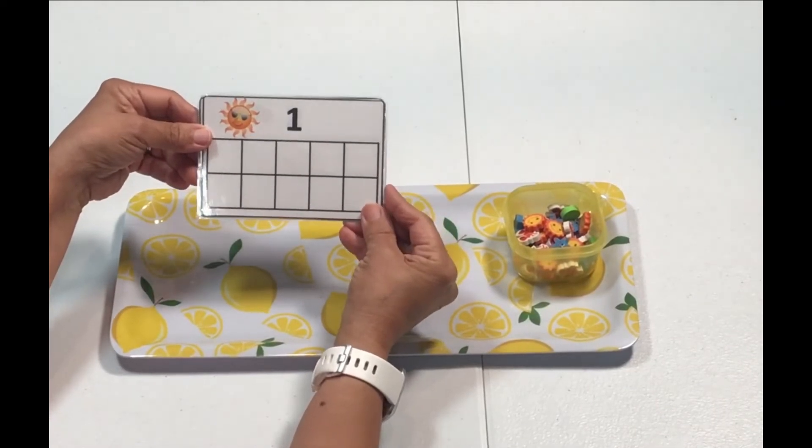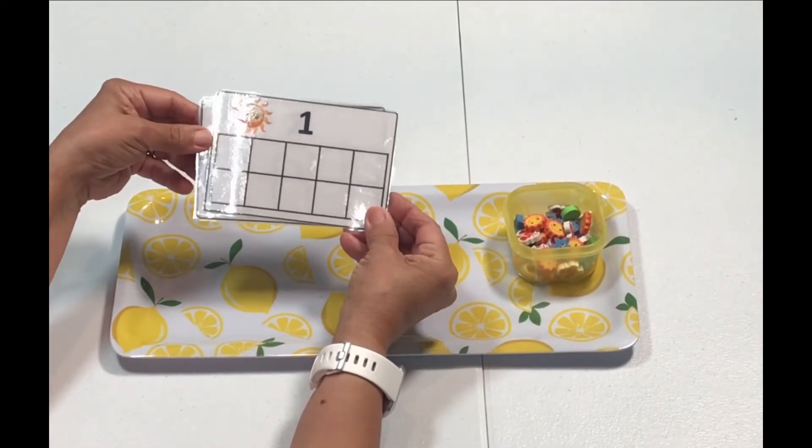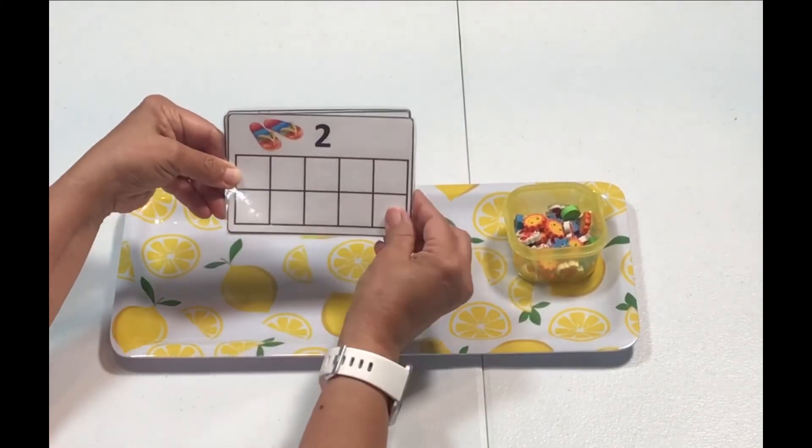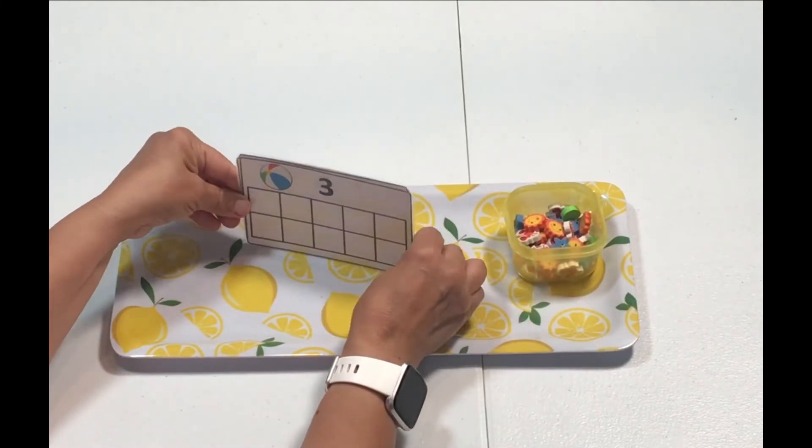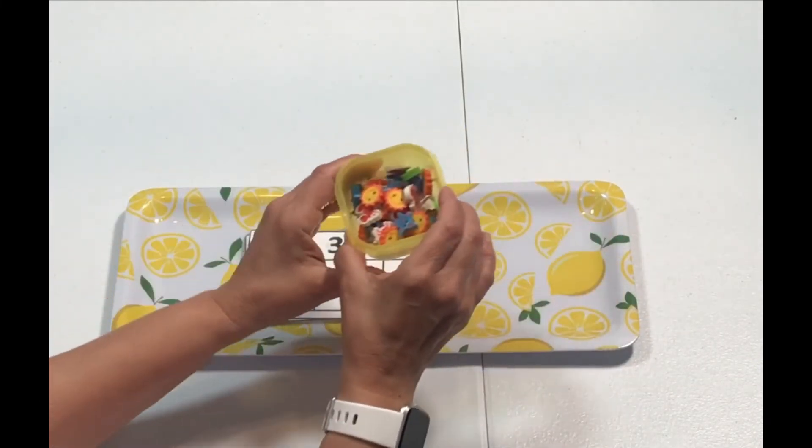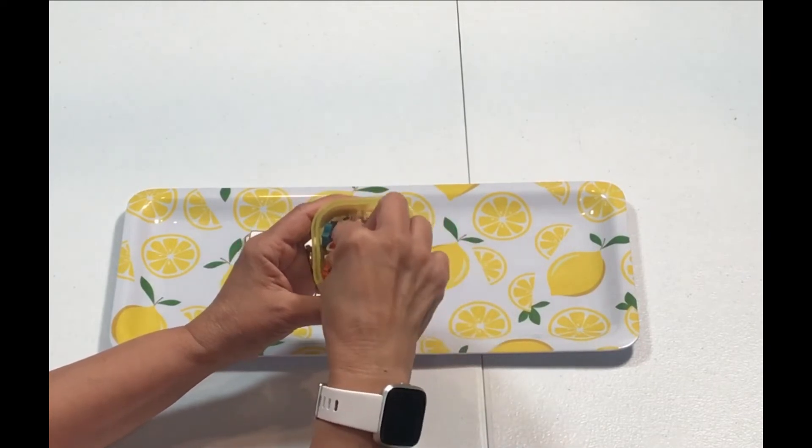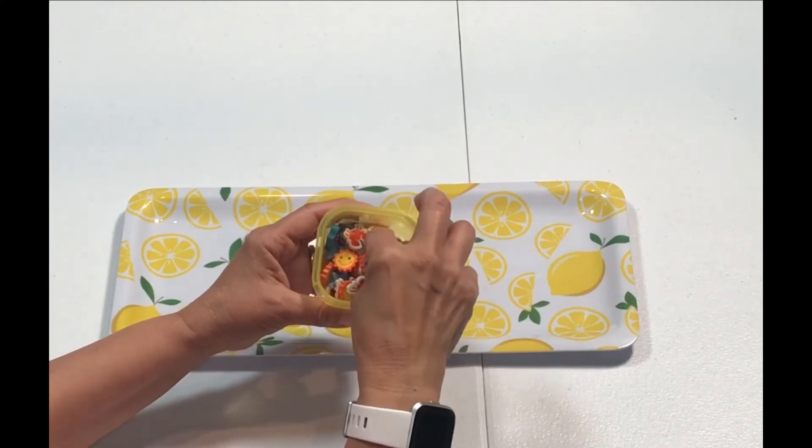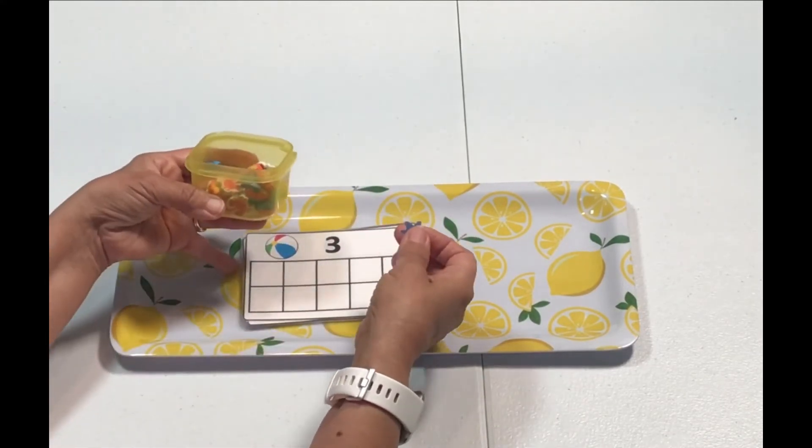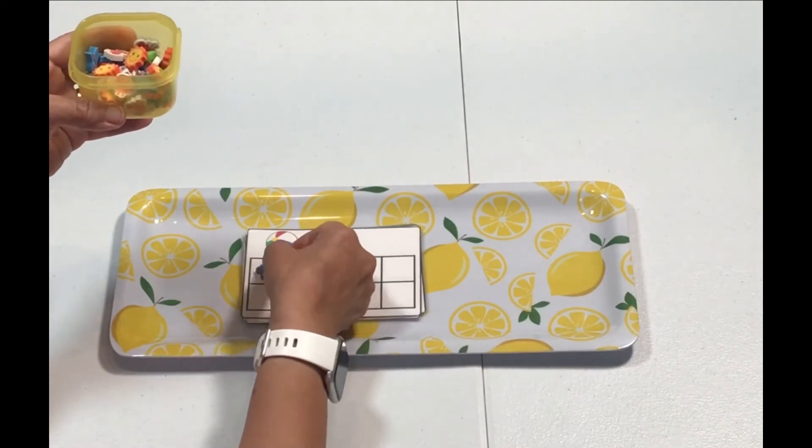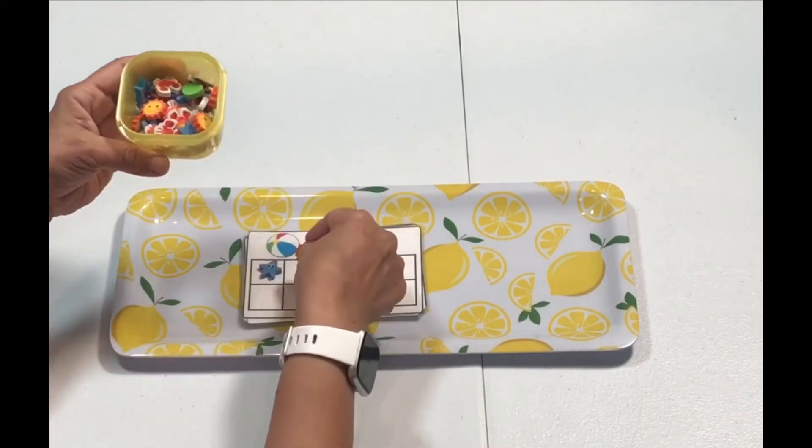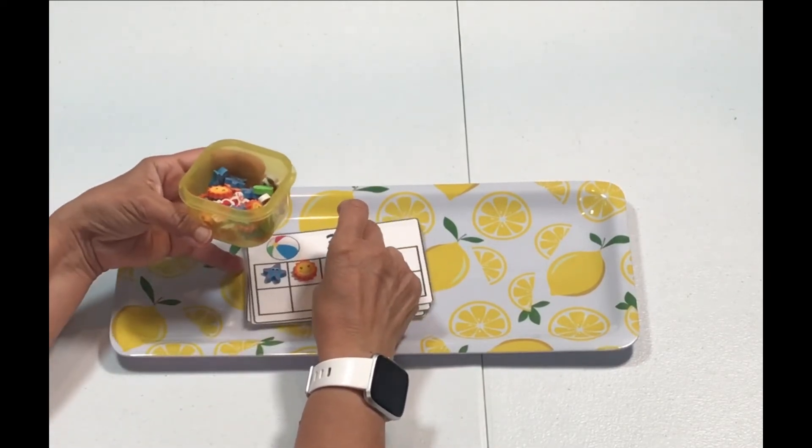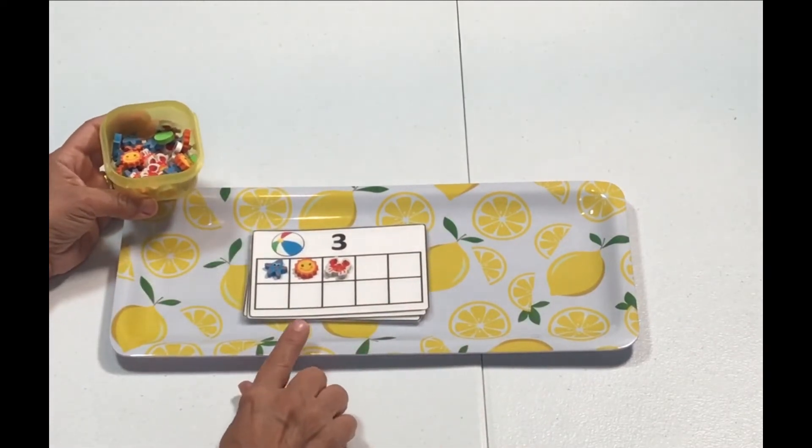This activity is a number quantity activity. I put together this printable. It has the 10 frame and I'm going to be using these manipulatives. I have some little sun erasers, crabs, starfish. So we're going to look at the number three and we're going to go ahead and put three of the little erasers: one, two, and three. This is a free printable and I'll go ahead and link it below.